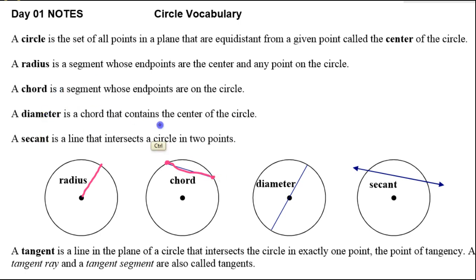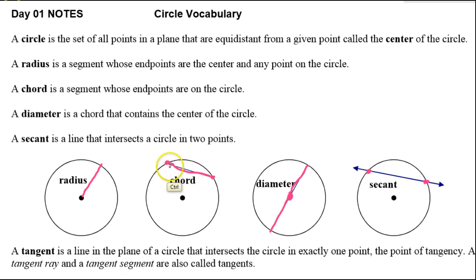A diameter is a chord that contains the center of the circle. So if I go from one side of the circle to the other and pass through the center, that is a diameter. A secant is a line that intersects the circle in two points. The difference between a secant and a chord is that a chord is a segment — it has an endpoint and another endpoint — whereas a line goes forever in both directions.